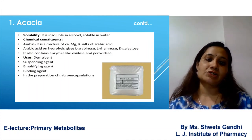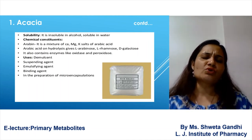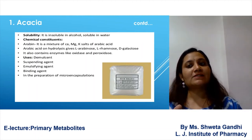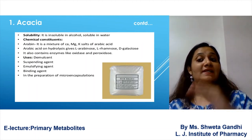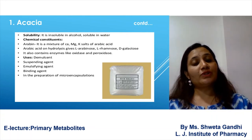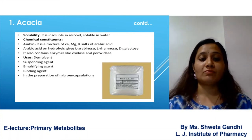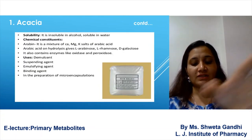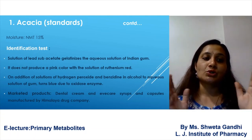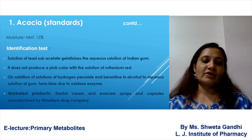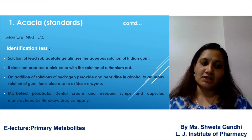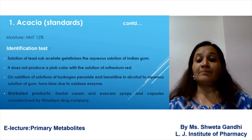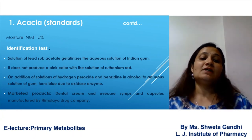This is the form of powdered gum arabic. The major constituent is arabin, which contains calcium, magnesium, and potassium salts. The main uses of acacia are as a suspending agent and emulsifying agent in pharmaceutical formulations — a suspending agent prevents sedimentation in suspensions. It is widely used in microencapsulation. The IP standard for acacia states moisture content should not be more than 15%. Marketed preparations include dental creams and Himalaya Drug Company syrups.